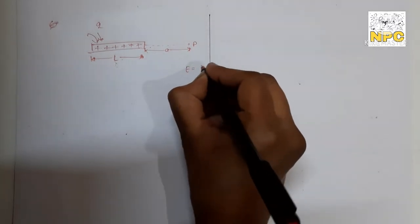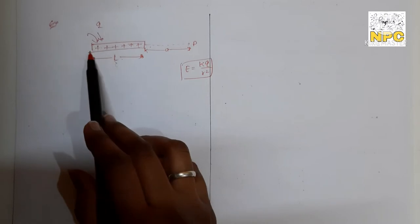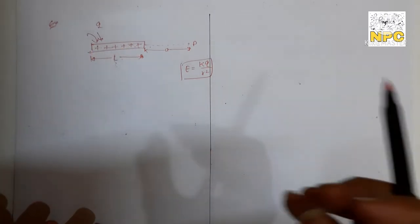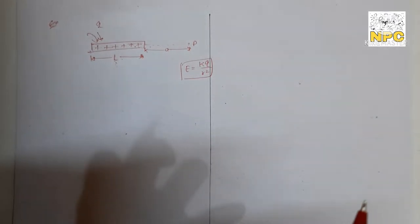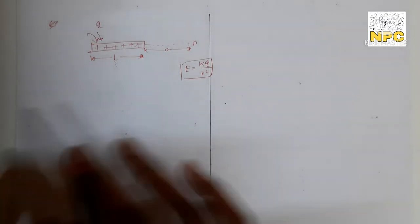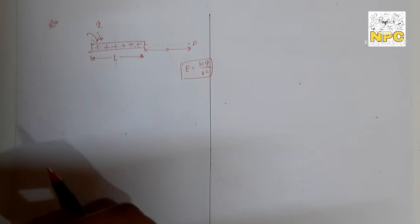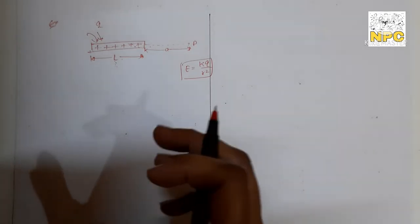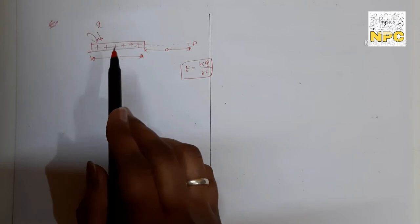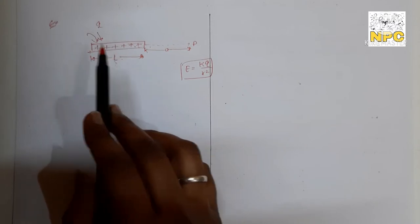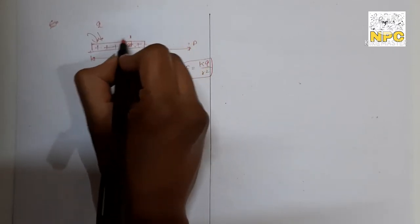Until now we studied finding electric field due to a point charge using E = kQ/r². But here charges are distributed linearly, which is a different case. The dipole case is also different since charges are only at two ends. So what method do we apply here? We cut the conducting wire into small segments.